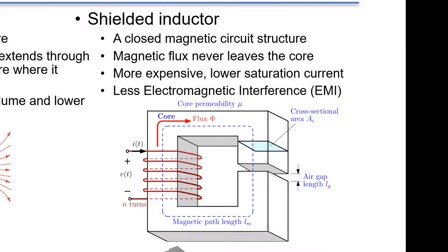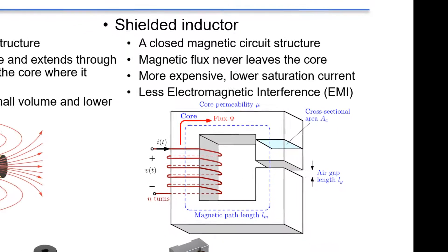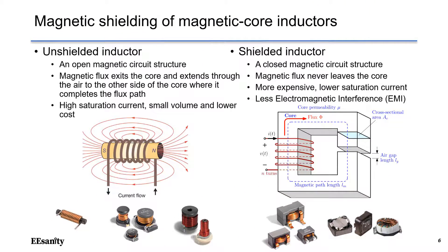On the right-hand side, we have the shielded inductor. It is designed so that magnetic flux never leaves the core, preventing the flux from interfering with sensitive circuits nearby. Shielded inductors are manufactured to fully encapsulate the coil in a form of magnetic shielding. Compared to an unshielded inductor of the same size and inductance, a shielded inductor has lower DC resistance, lower saturation current, and higher cost.